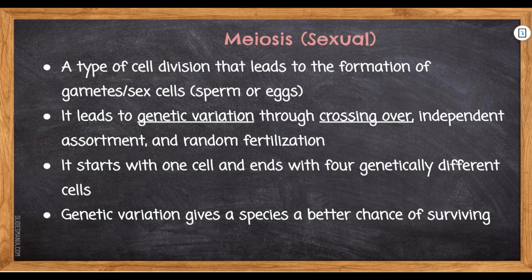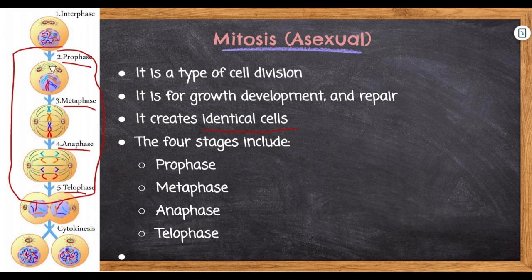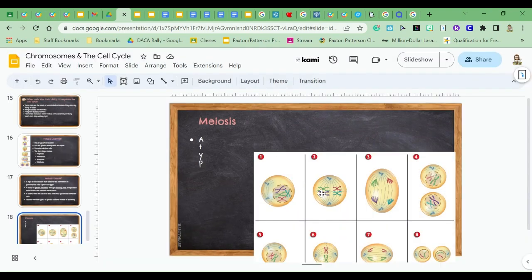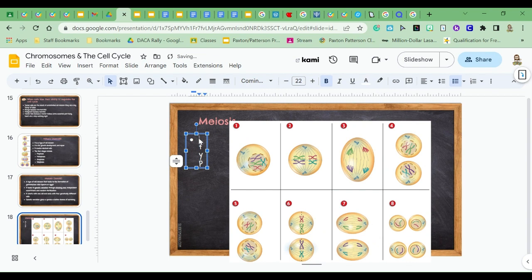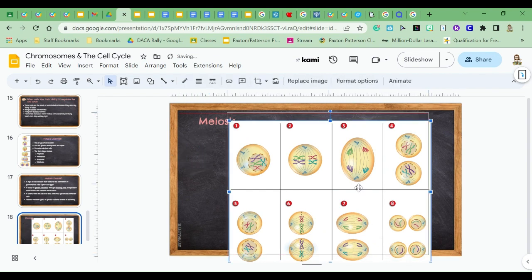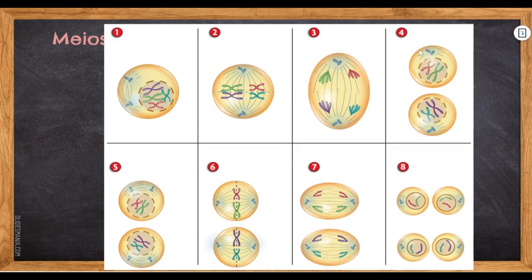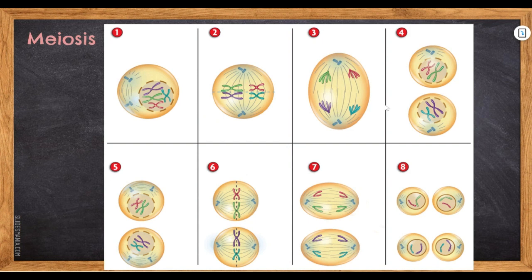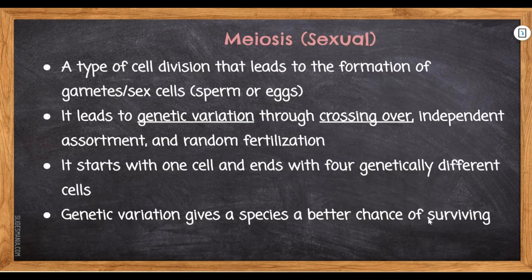Mitosis is for growth, development, and repair, creating identical cells. Now let's look at meiosis. Meiosis looks very similar to mitosis but there are actually two rounds of it. Instead of having just one process, you have two different processes. It goes from one cell to two cells, and then these two cells end up turning into four cells. Meiosis is sexual reproduction — it is creating sperm or eggs, the fancy name for which is gametes.